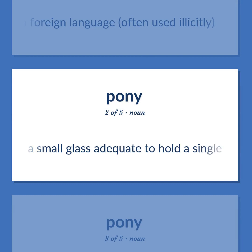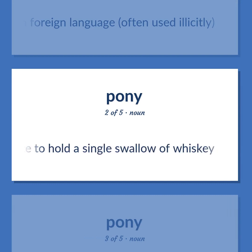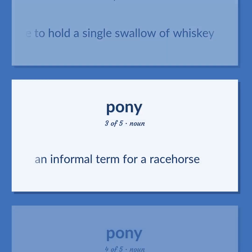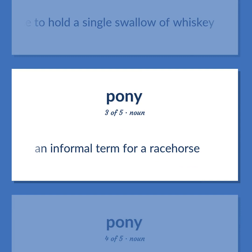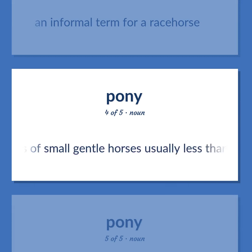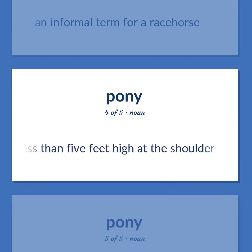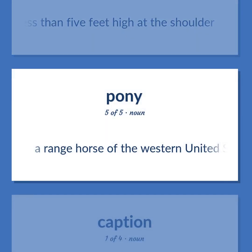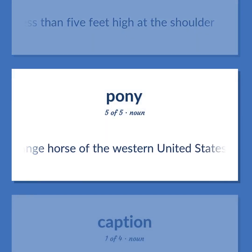Trot: A small glass adequate to hold a single swallow of whiskey. An informal term for a racehorse. Any of various breeds of small gentle horses usually less than 5 feet high at the shoulder. A range horse of the western United States.